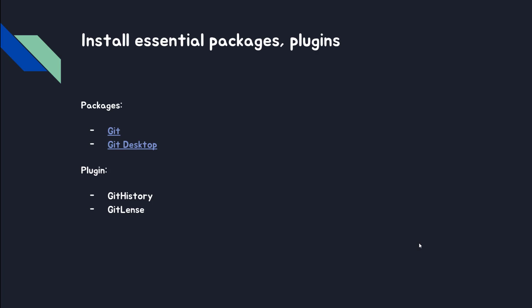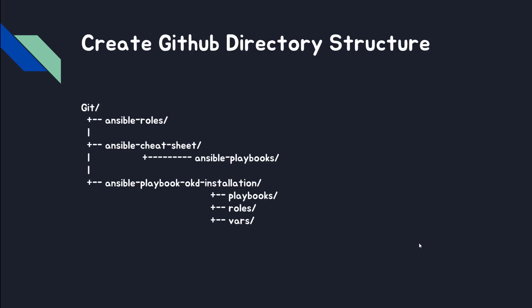Packages: git and git desktop. Plugins: git history, git lens — everything related to git. We will create the GitHub directory and this is the structure.